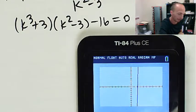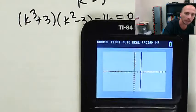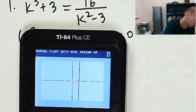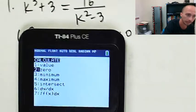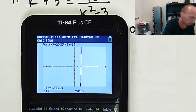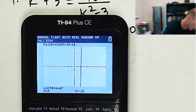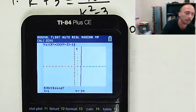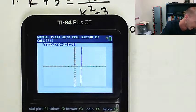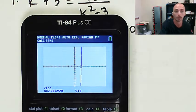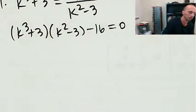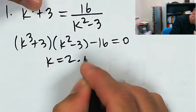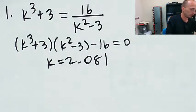We're going to go right here to calculate because that's where a lot of the good stuff is. We're going to calculate a zero. You can select a point to the left of it, but I can tell that x equals 1 is to the left of that intercept, and x equals 3 is to the right. And then I've got my answer, 2.081. k equals 2.081.